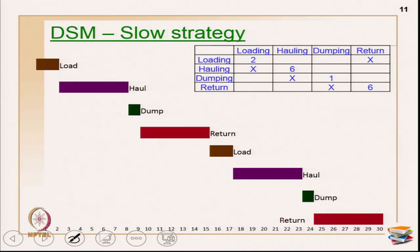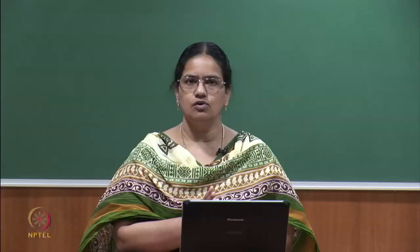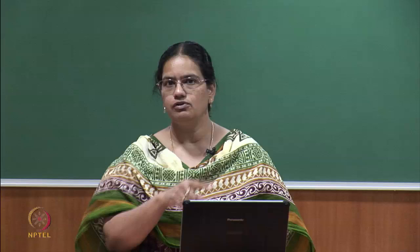The cycle flow is: after loading I do hauling, after hauling I do dumping, after dumping I do return, and once returned I go back to loading again. This is a good example of slow strategy. If I have only one dump truck as a resource, I have to complete one full cycle before starting the next - this reveals a resource pattern. So with one resource, I execute all four activities in one round, then repeat all in the second round, and so on.